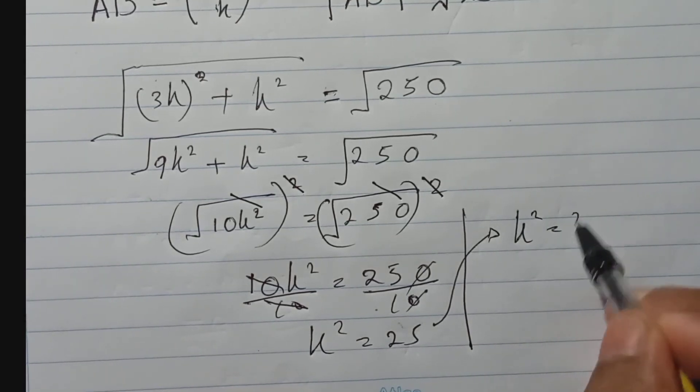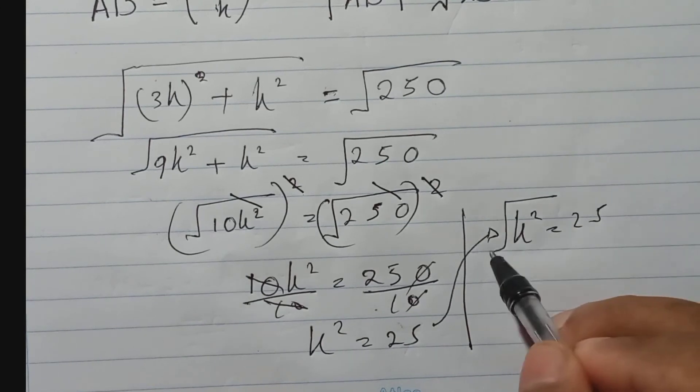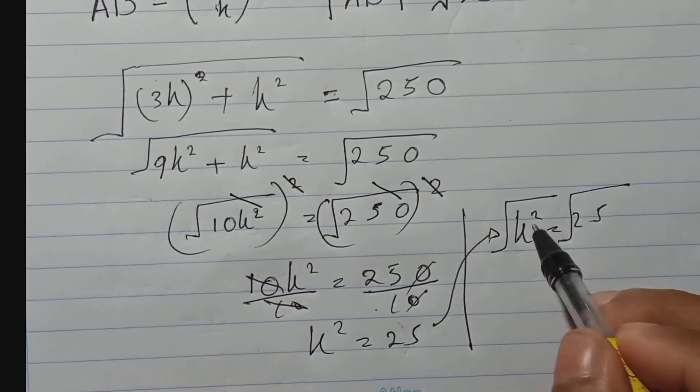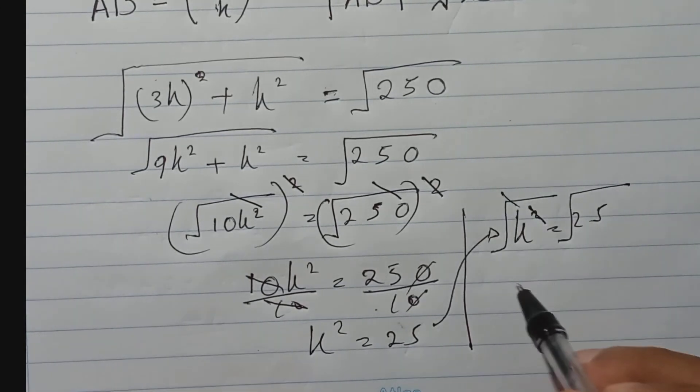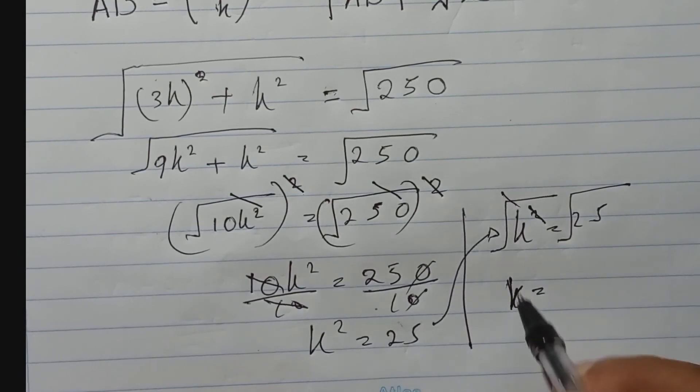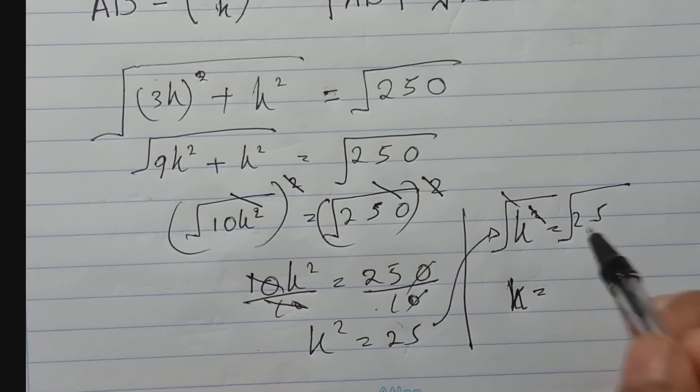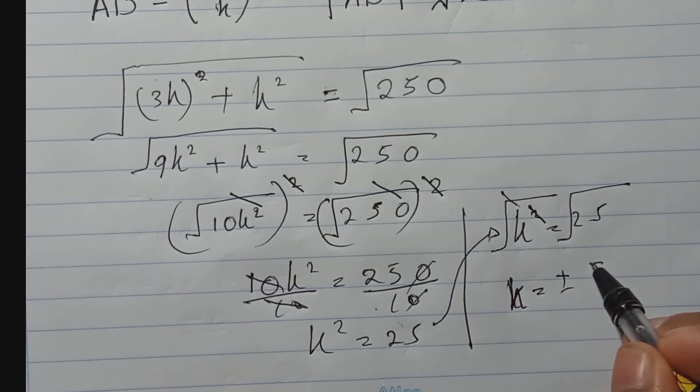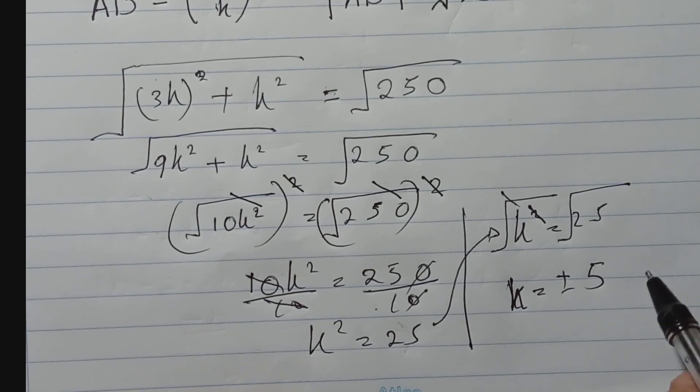Now how to get k? Both side get again square root, so again square to square root cut. Here will be k, here will be square root of 25. Square root of 25 it will be plus or minus 5, plus or minus 5, that's the answer.